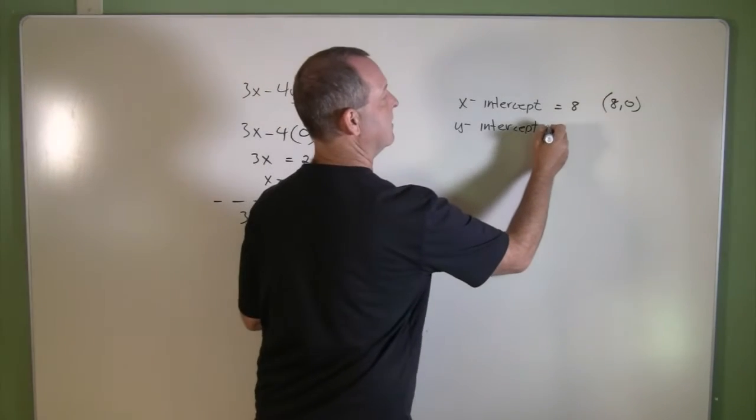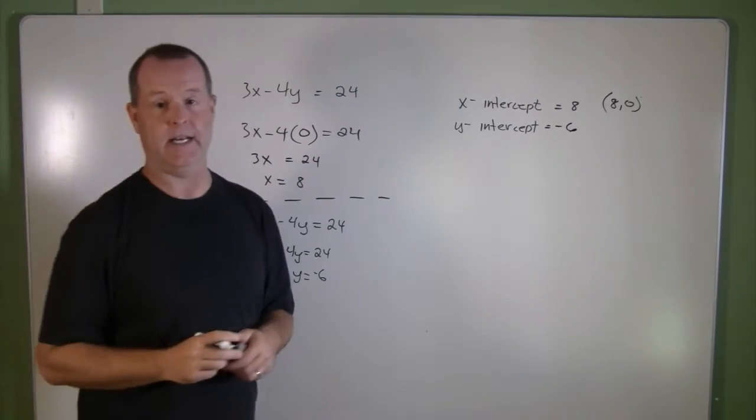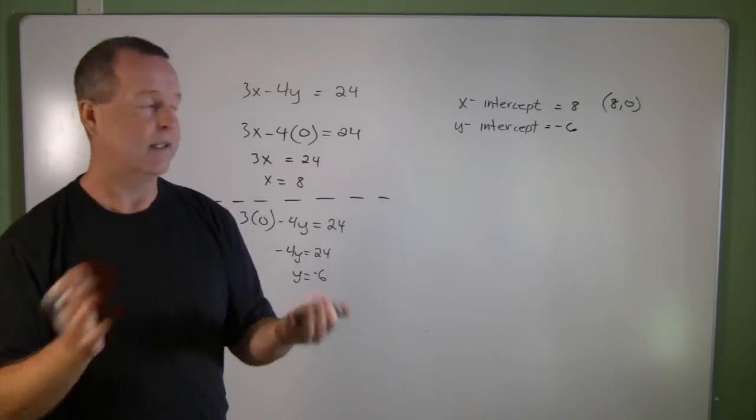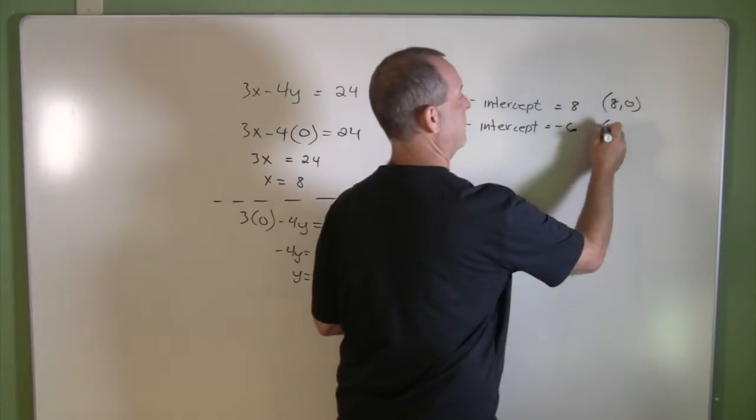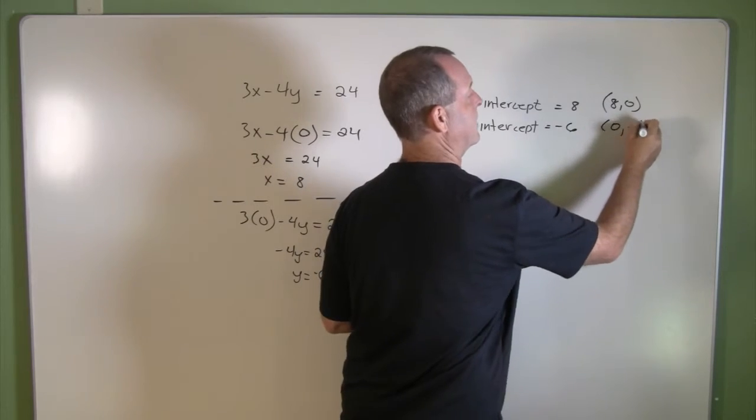So I have a y-intercept of negative 6, and its coordinate is at the point (0, negative 6).